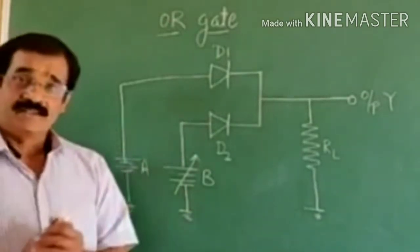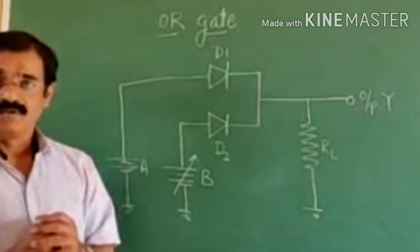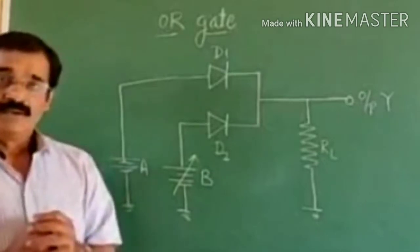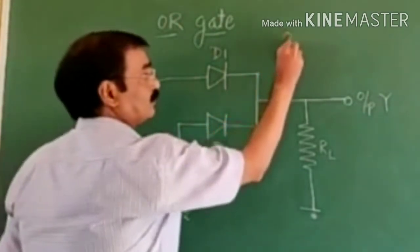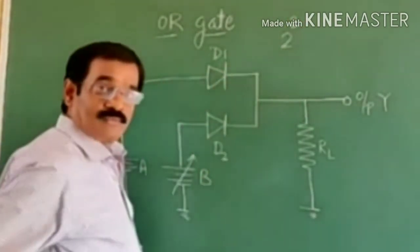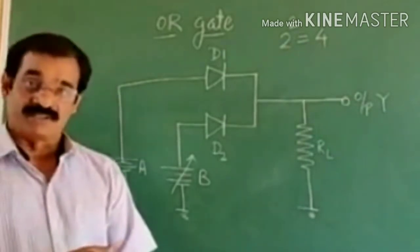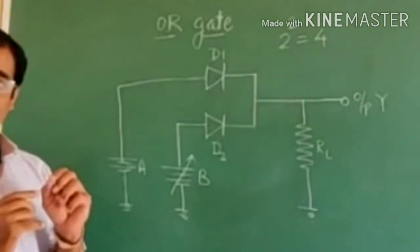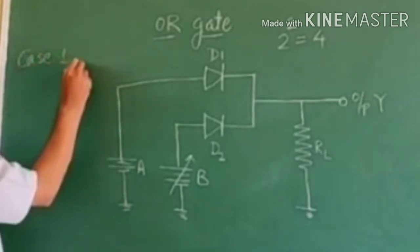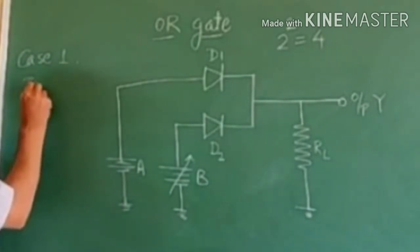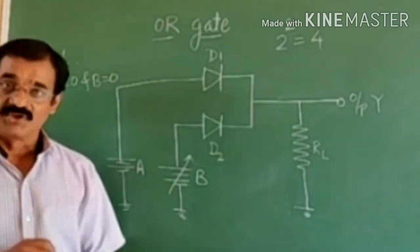Now we will see the working of the OR gate. There are four input possibilities. Why are there only four input possibilities? Because the base of the binary number system is 2 and the number of inputs is also 2, so 2 squared is equal to 4. So there are only four input possibilities. First input possibility: suppose Case 1 — if A is equal to 0 and B is equal to 0, that means both inputs are 0.